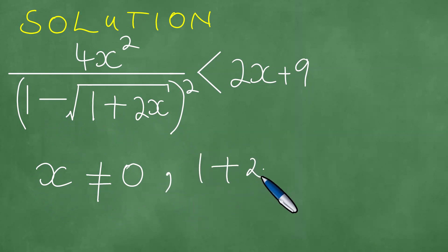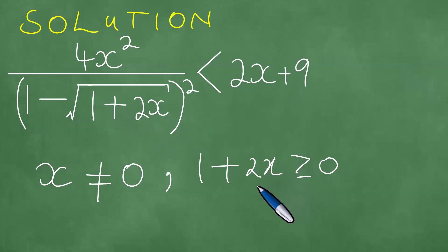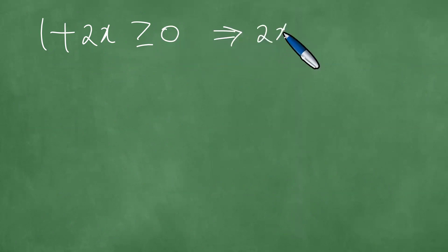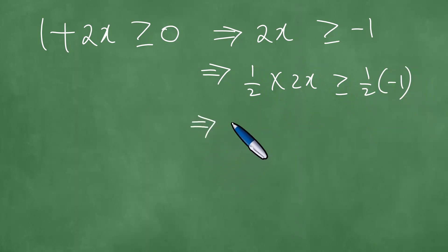Moreover, under the square root we have 1 plus 2x, that must be greater or equal to 0, because square roots are defined only for non-negative values. So if 1 plus 2x is greater or equal to 0, then 2x is greater or equal to minus 1. To solve this, we multiply both sides by one half, giving x is greater or equal to minus one half.